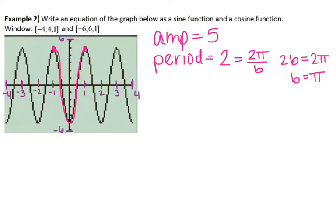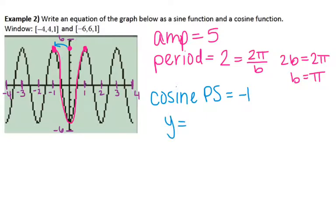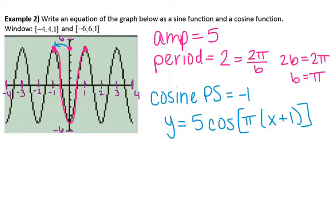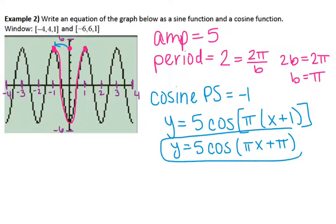Since I already have my cosine cycle drawn, I'll write the cosine equation first. Cosine normally starts on the y-axis, but due to a phase shift, the peak is now at negative 1. So the phase shift for cosine is negative 1. The equation is y = 5cos(π(x + 1)). Since b is not 1, we distribute π into the parenthesis: π times x is πx, and π times 1 is π. So the cosine equation is y = 5cos(πx + π).